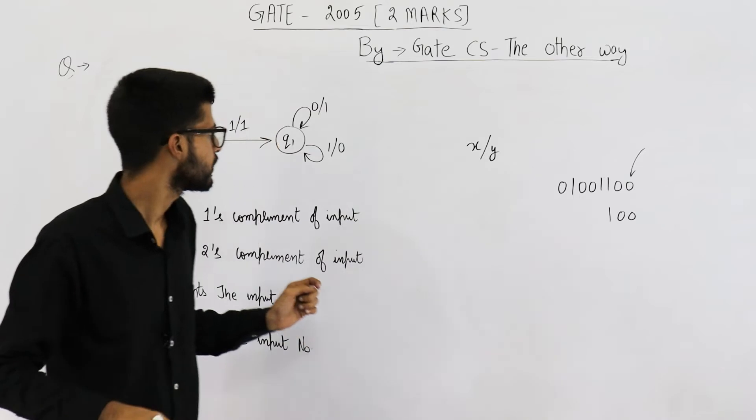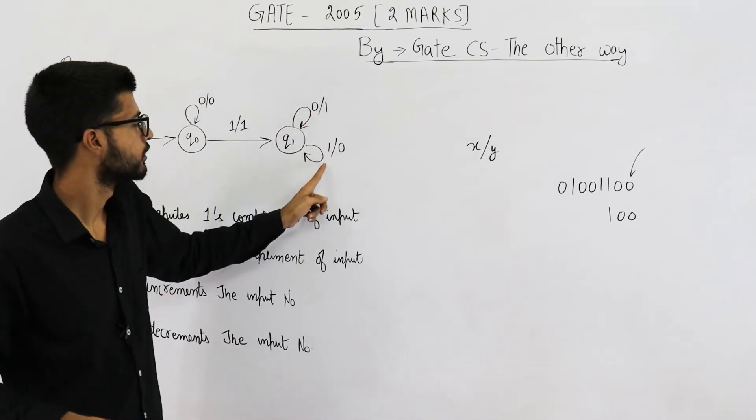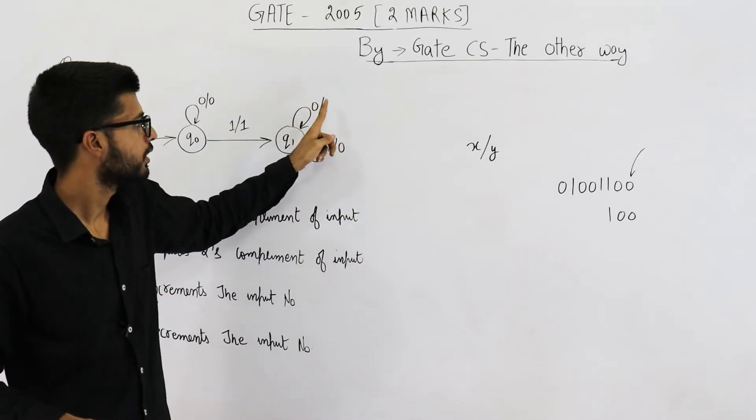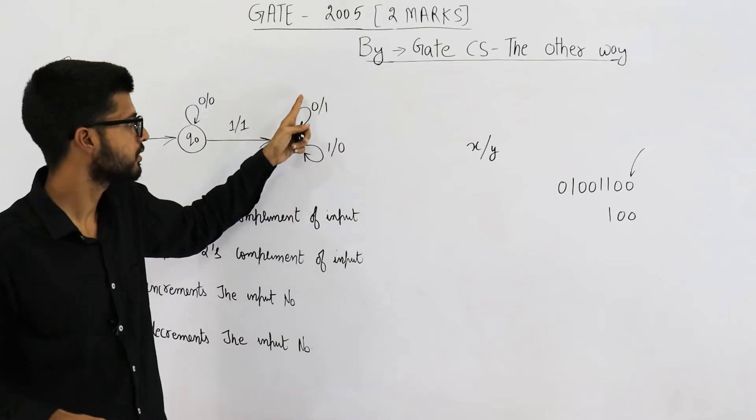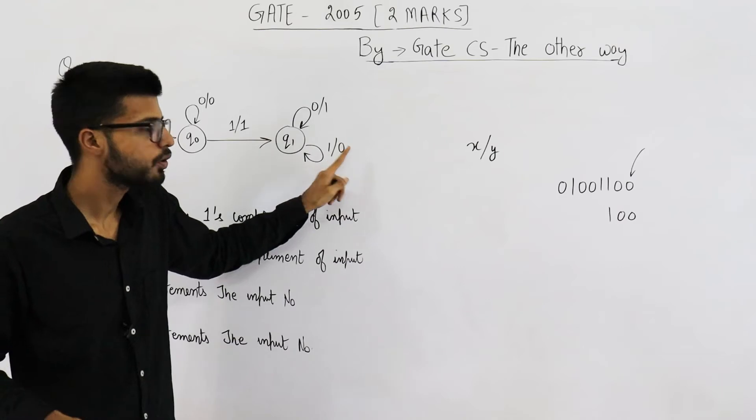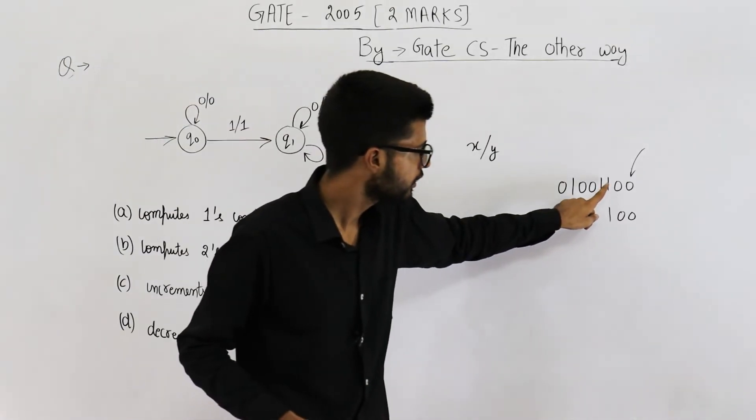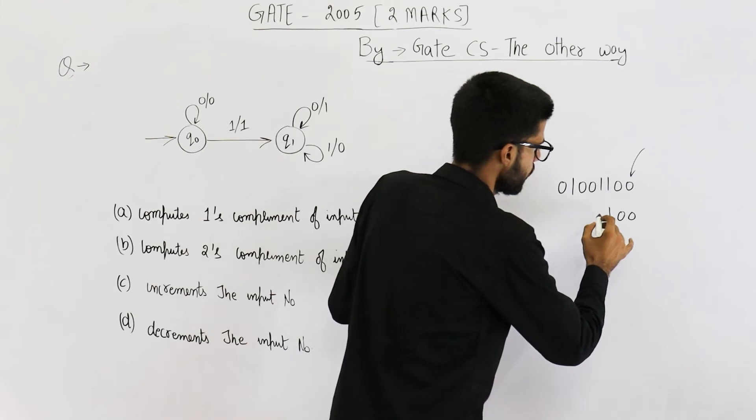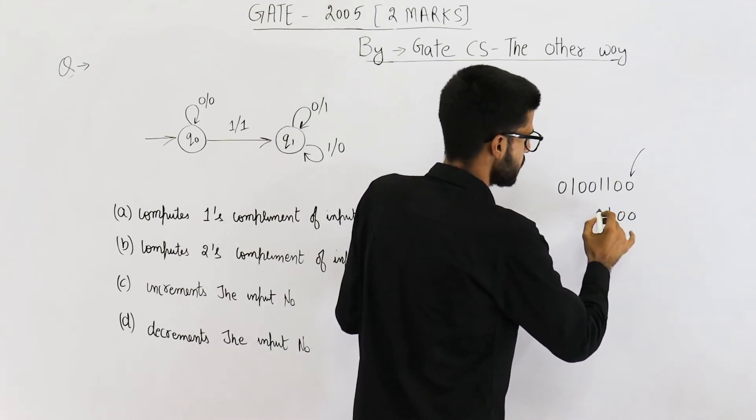But after encountering the first 1, whatever bits you see, this 0 is replaced by 1. That means if input is 0, you will output 1. If input is 1, you will output a 0. So after encountering this first 1, you will reverse all these bits.